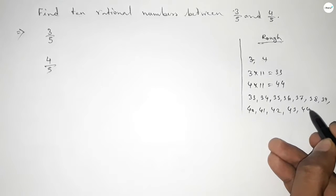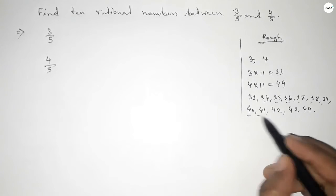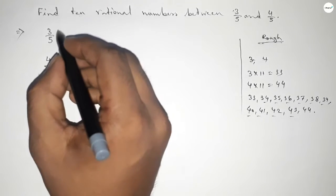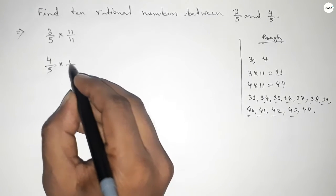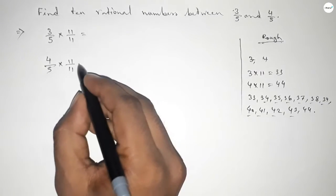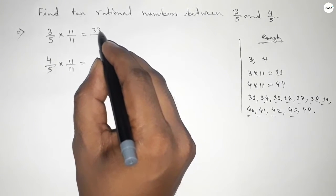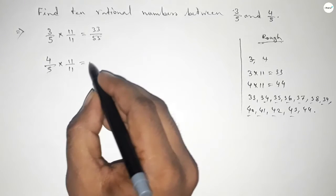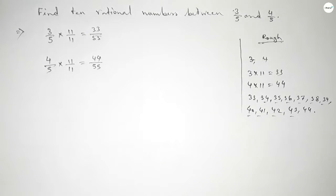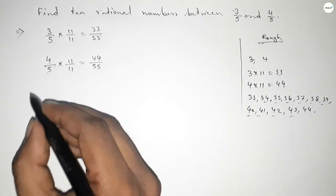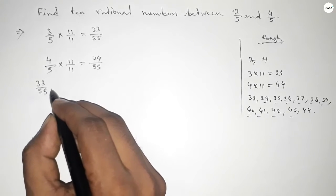So these are the 10 rational numbers. We should multiply both numbers by 11 by this way. So this is 33 over 55 and this is 44 over 55, and we already find out 10 natural numbers.